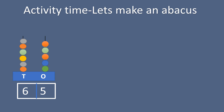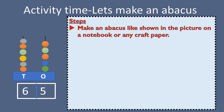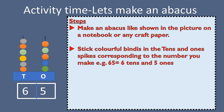I am going to take you through the steps of how we are going to create an abacus of a two-digit number with the help of bindis. Steps are as follows: you have to make an abacus like shown in the picture on a notebook or any craft paper. Then you have to stick colorful bindis in the tens and ones spikes corresponding to the number you make. For example, 65 has six tens and five ones, so you will stick six bindis in the tens rod and five bindis in the ones rod.